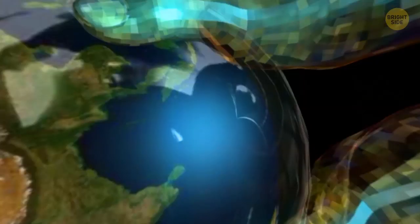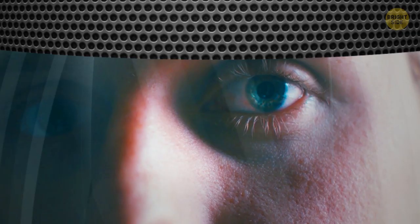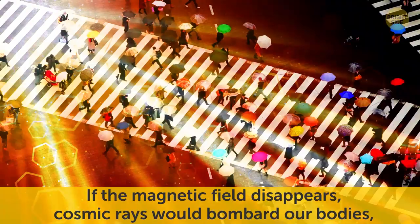Our magnetic field protects the planet from being bombarded by streams of deadly radioactive particles. If they reach the Earth's surface, people would be in real danger. See for yourself, astronauts on lunar missions told about flashes of lights they saw when they closed their eyes. It happened after cosmic rays had been passing through their retinas for some time, and later it led to cataracts. So, if the magnetic field disappears, cosmic rays would bombard our bodies, causing serious diseases such as cancer and even changing our DNA.